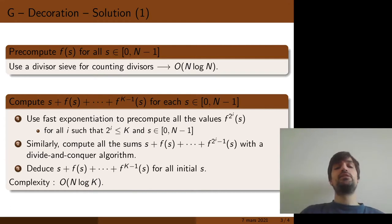The next step is to compute the sum of the iterated images of each integer s between 0 and n-1. To do this, first you use fast exponentiation to precompute all the values of f to the 2 to the i of s for all s between 0 and n-1, and for all i such that 2 to the i is smaller than k.